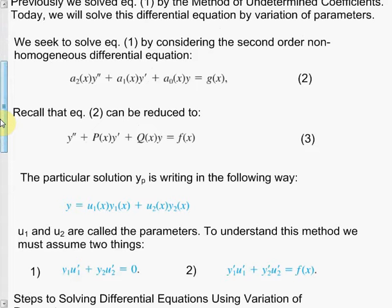The parameters u₁ and u₂ are to be determined. We assume two things: first, that y₁·u₁' + y₂·u₂' = 0; and second, taking the derivatives of y₁ and y₂, that y₁'·u₁' + y₂'·u₂' = f(x). We are simply setting up the Wronskian scheme.